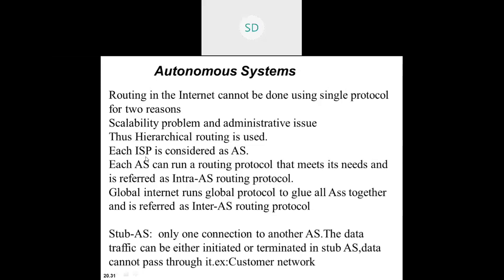For all these reasons, hierarchical routing is used. Each Internet Service Provider is considered an autonomous system (AS). Each AS can run a routing protocol that meets its needs, referred to as an intra-domain routing protocol. The global internet runs a global protocol to connect all autonomous systems together, referred to as an inter-domain routing protocol.